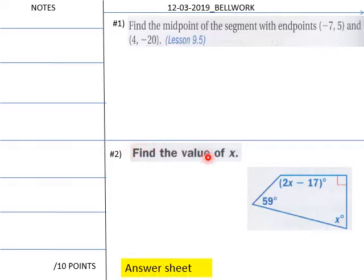Okay teachers, here's today's bell work. We have find a midpoint segment of these two points and then find the value of x here on this quadrilateral students. Give your students about six minutes because of that one.